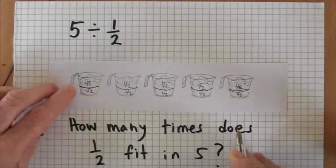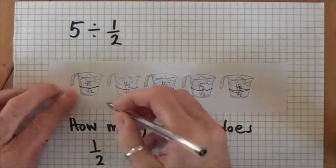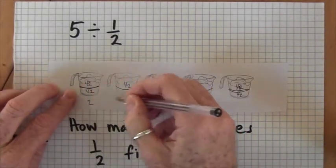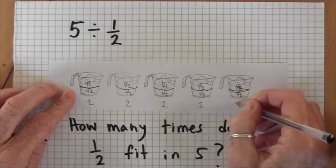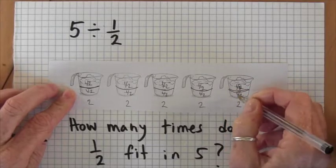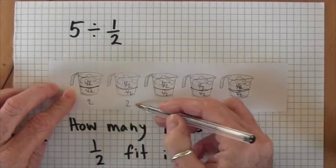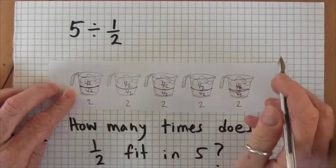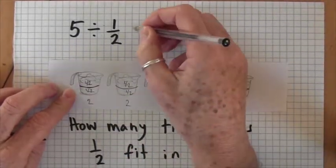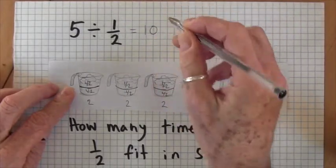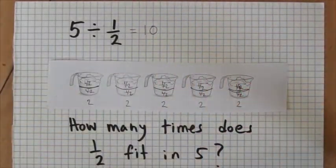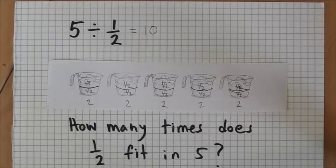I'm seeing how many half cups are in five cups. There are two half cups in each cup, so across five cups that's two, four, six, eight, ten — or five times two — ten half cups in five. This problem can also be solved on a number line going from zero to five, asking: how many halves in five? I divide each whole unit into halves and count: ten halves in five.